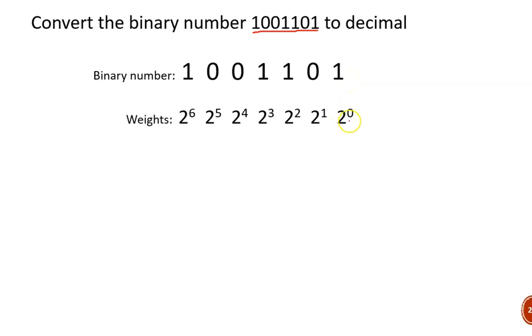The exponents, starting from the right, begin at zero and then go 1, 2, 3, and so on until we reach the end. In this case, the most significant bit happens to have a weight of 2 to the 6. Now we take each bit value, 1 or 0, multiply it by the bit weight, and then add those results.